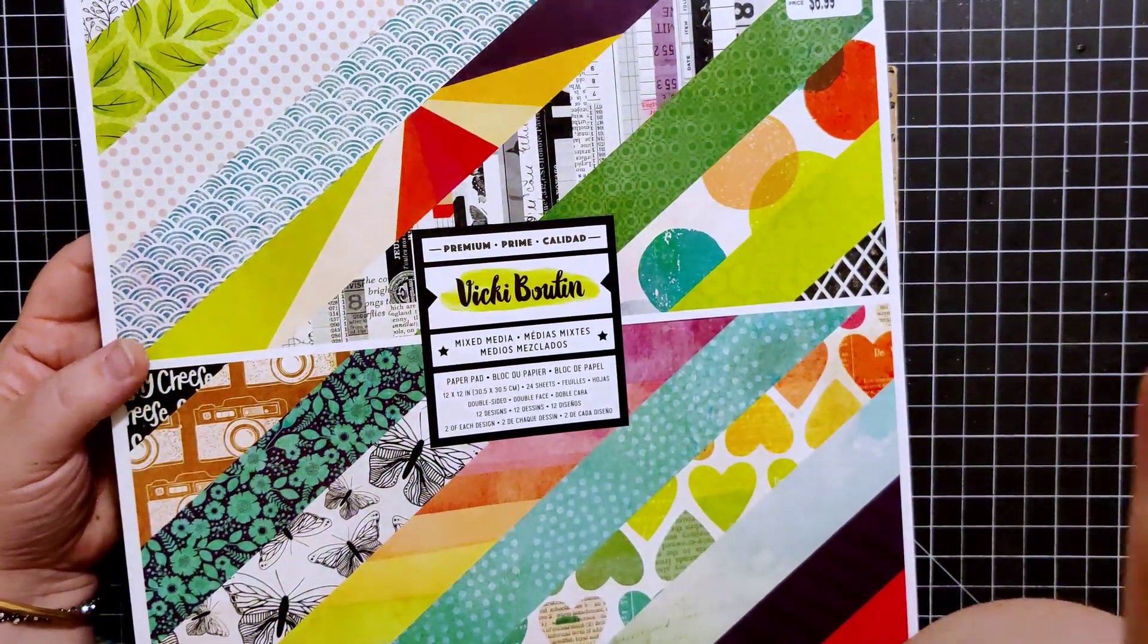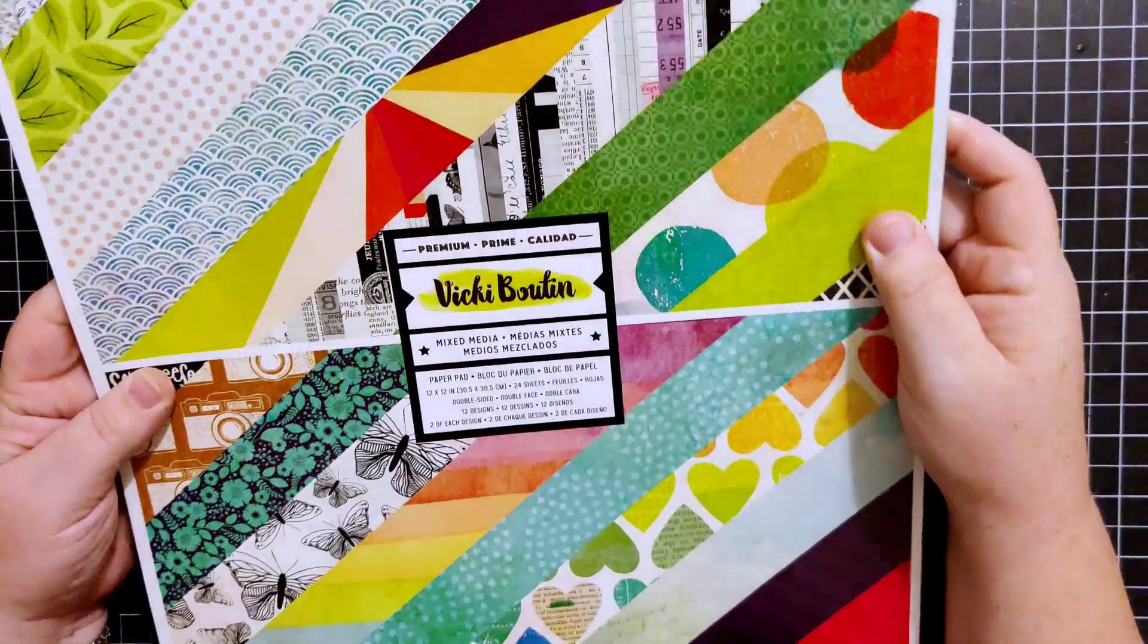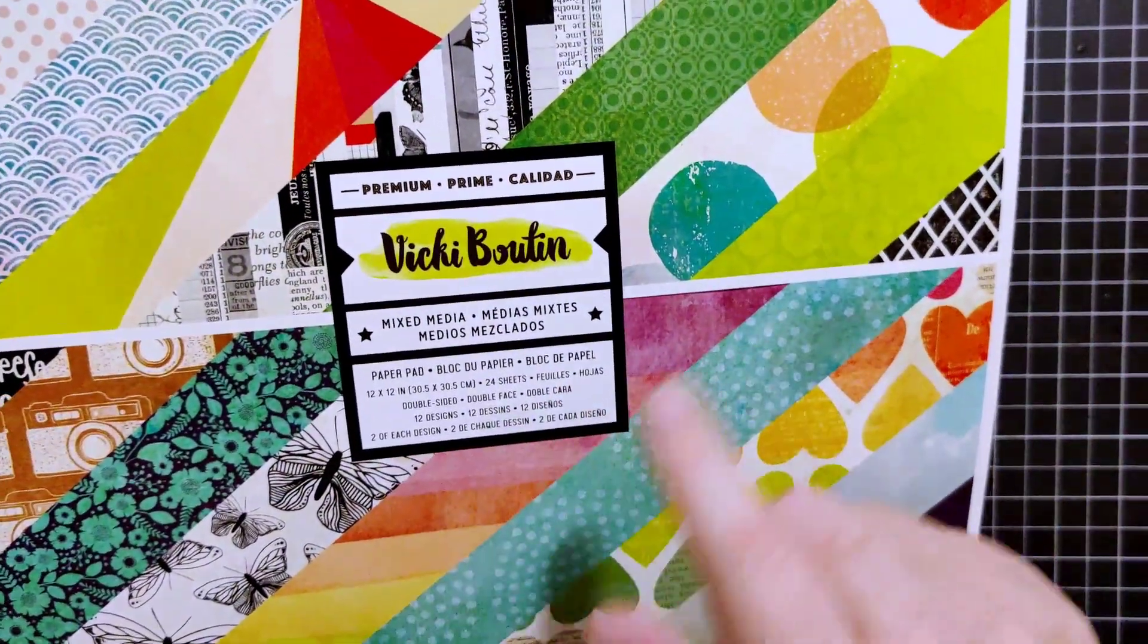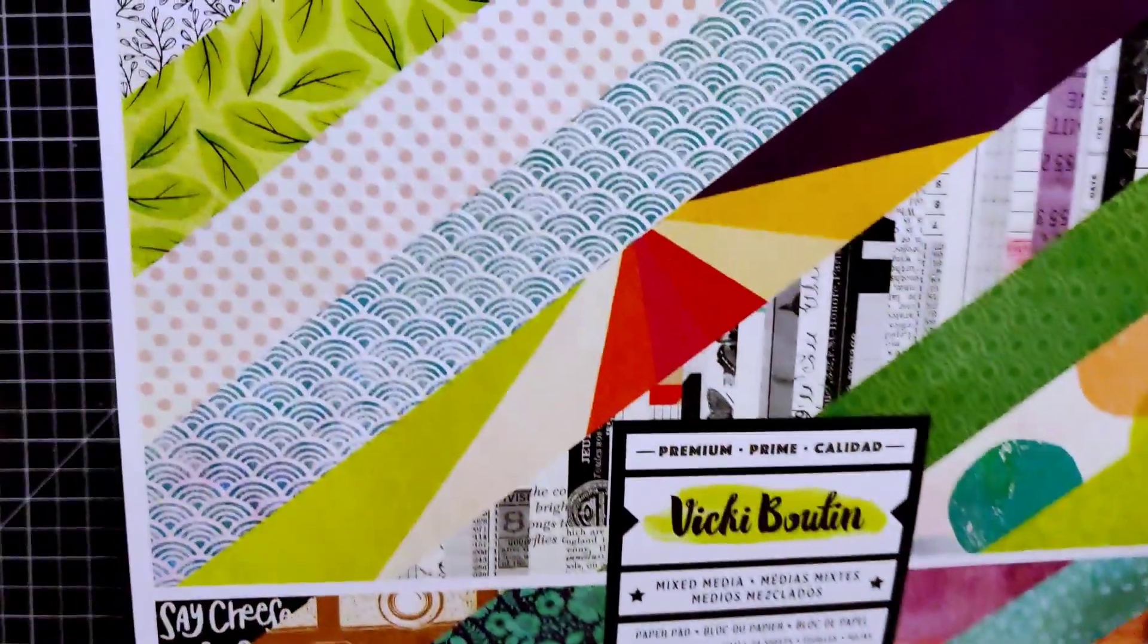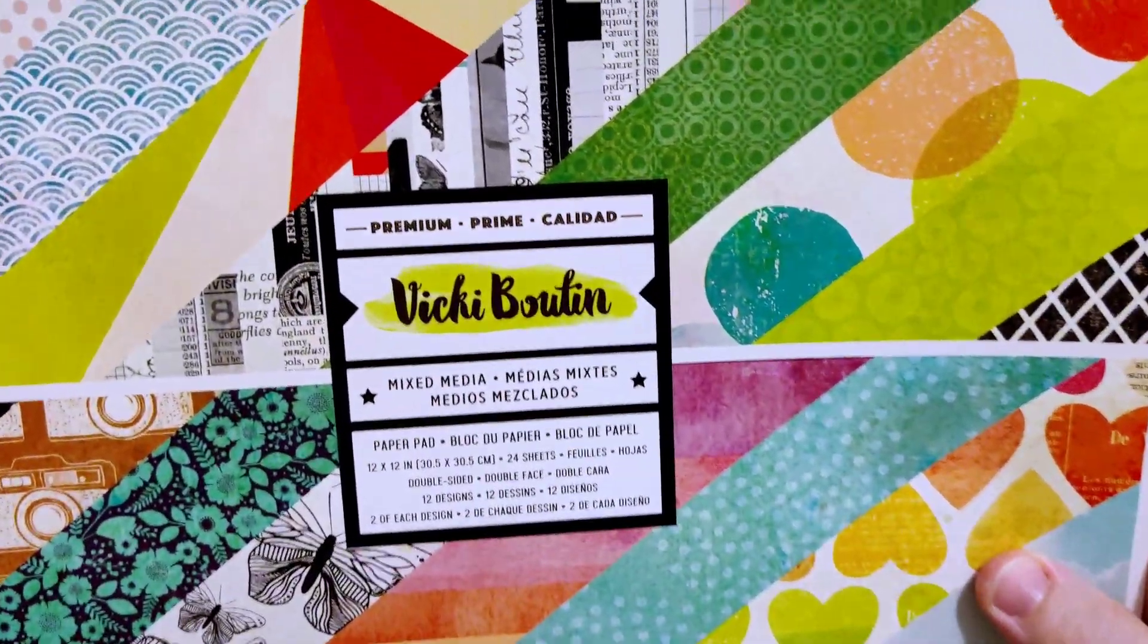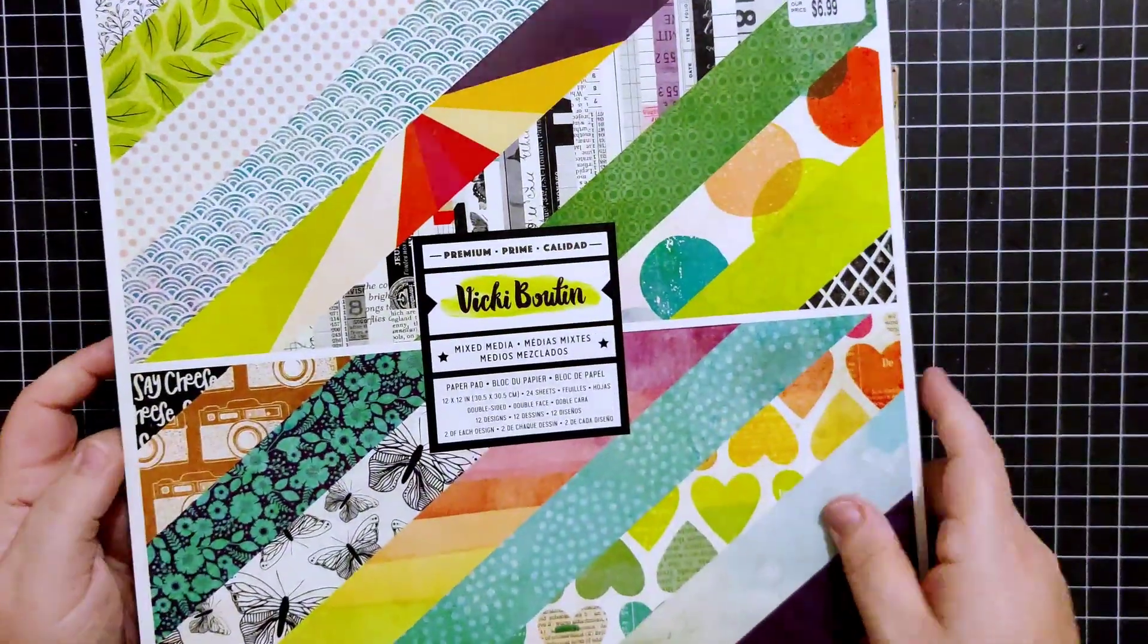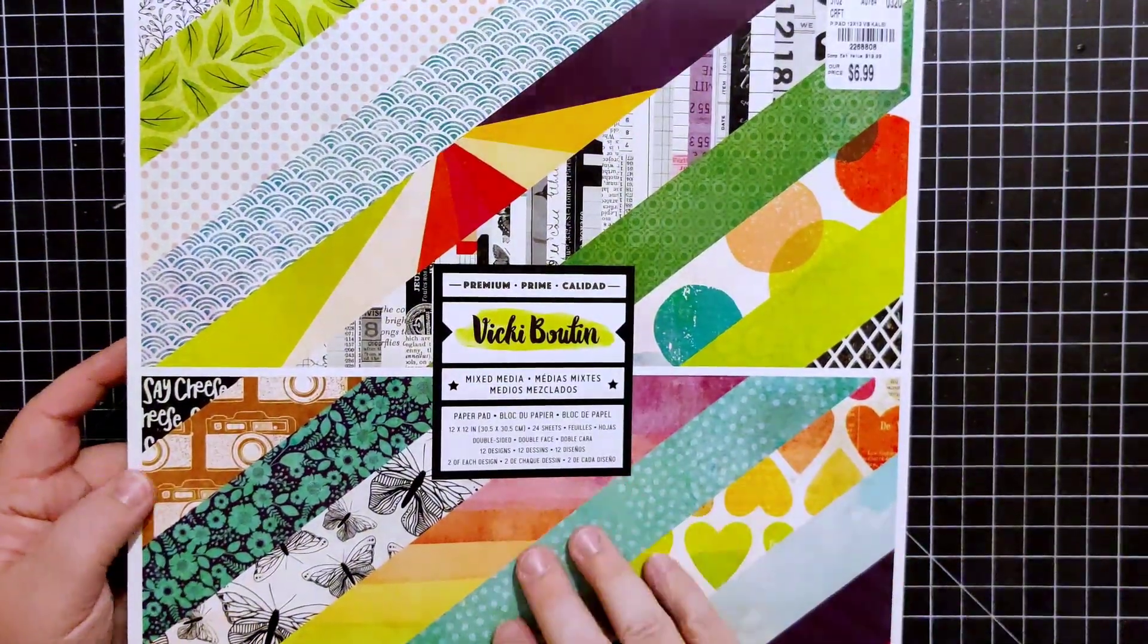I still have one tub of paper pads here that has not been packed away, and in that bin of paper pads is this one from Vicky Boutin, amazing artist by the way, and she has a YouTube if you want to check her out. This one is mixed media, premium, we're gonna say it's called mixed media. This is what the cover looks like, this is what the back cover looks like, distributed by American Crafts. Joann's I know carries it, I got this at Tuesday Morning back in March of 2020.